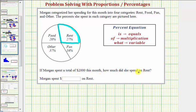And therefore, to determine the amount spent on rent, we need to answer the question: what is 27% of her total expenditures of $2,000?